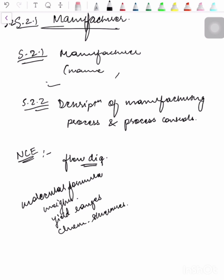The diagram should also identify operating conditions and solvents. A sequential procedural narrative of the manufacturing process should be submitted. The narrative should include quantities of raw materials, solvents, catalysts, and reagents reflecting the representative batch scale for commercial manufacture, identification of critical steps, process controls, equipment and operating conditions such as temperature, pressure, pH, and time. Alternate processes should be described with the same level of detail, and reprocessing steps should be identified and justified.